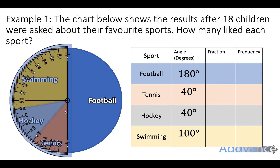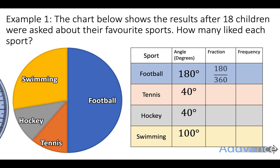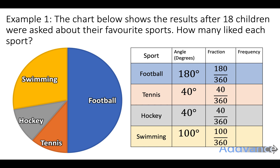If you need to refresh how to use a protractor, you should go and watch my video on using a protractor before we continue. If you're happy with protractors, let's continue. So now we know that the angle of football is 180 over 360. The angle covered by tennis will be 40 out of the whole circle, which is 360. Again 40 out of 360, and then 100 out of 360.